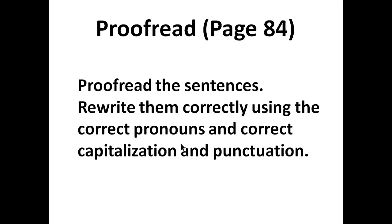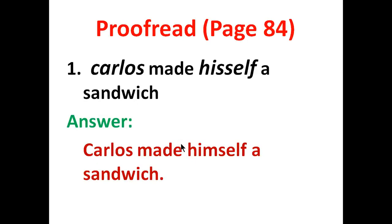Now we are going to proceed to page 84. This is a proofreading exercise — finding the mistakes, correcting them, and rewriting the sentences. Number one: 'Carlis made himself a sandwich.' There are three mistakes: first, 'Carlis' is a proper noun starting the sentence, so C must be capital; second, the reflexive pronoun should be 'himself'; third, there must be a full stop at the end. The correct sentence is: Carlis made himself a sandwich.